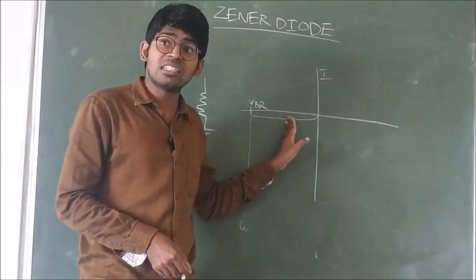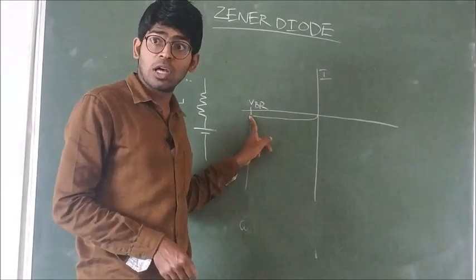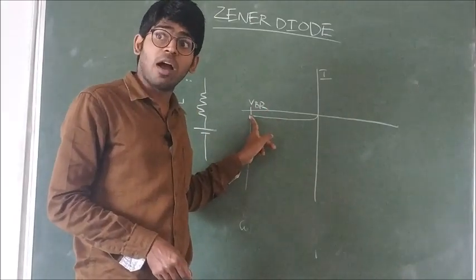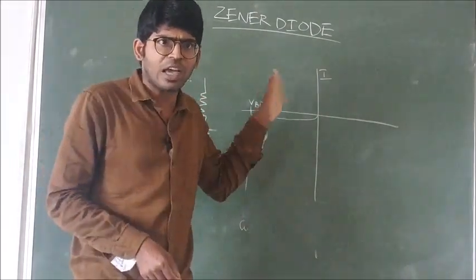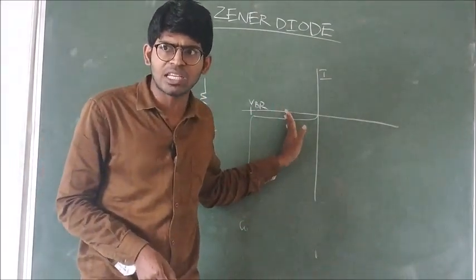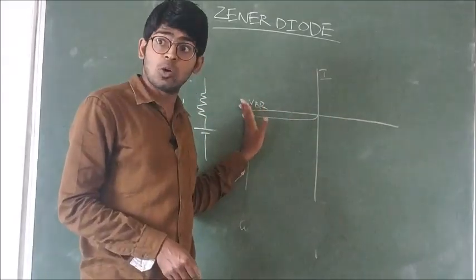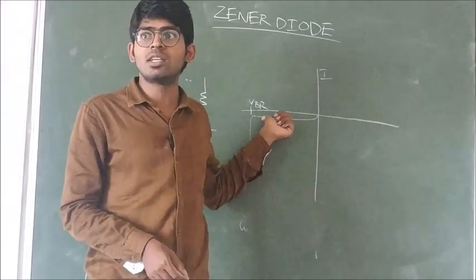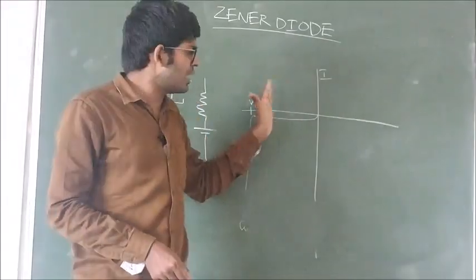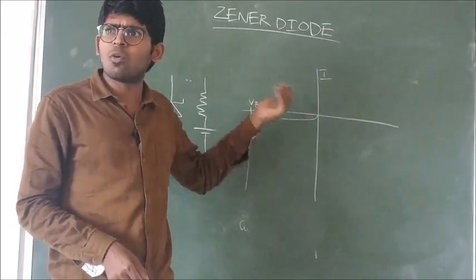If we are increasing the voltage until breakdown, there is a small amount of current called reverse saturation current. After the breakdown, if you try to increase the voltage, the voltage will not increase. Suddenly the current rises, even though we are increasing the voltage.